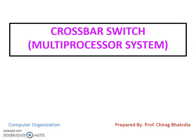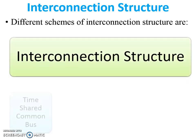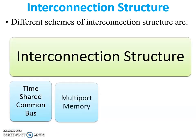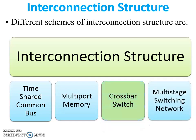Hello friends, myself Shirad. Today I am going to discuss with you the crossbar switch multiprocessor system topic of computer organization and architecture. There are four different schemes in the interconnection structure of a multiprocessor system: first is time-shared bus, second is multi-port memory, third is crossbar switch, and fourth is multi-stage switching network. Today we will discuss crossbar switch; the remaining three videos are available on my channel.